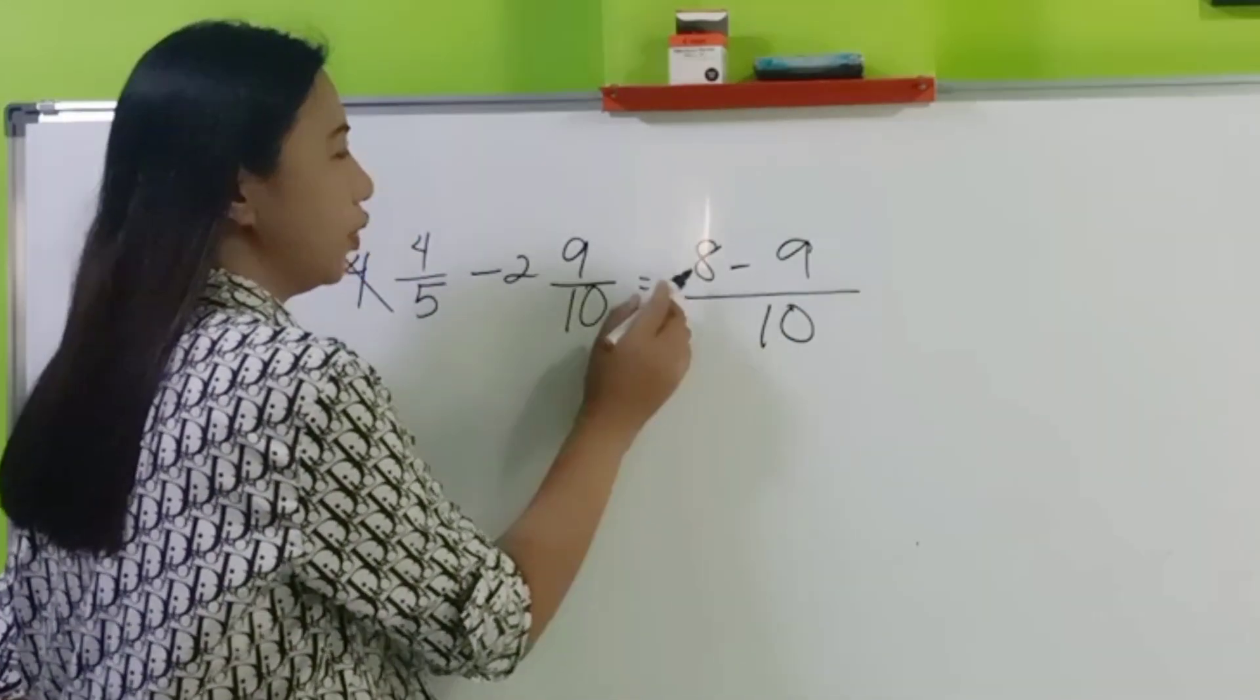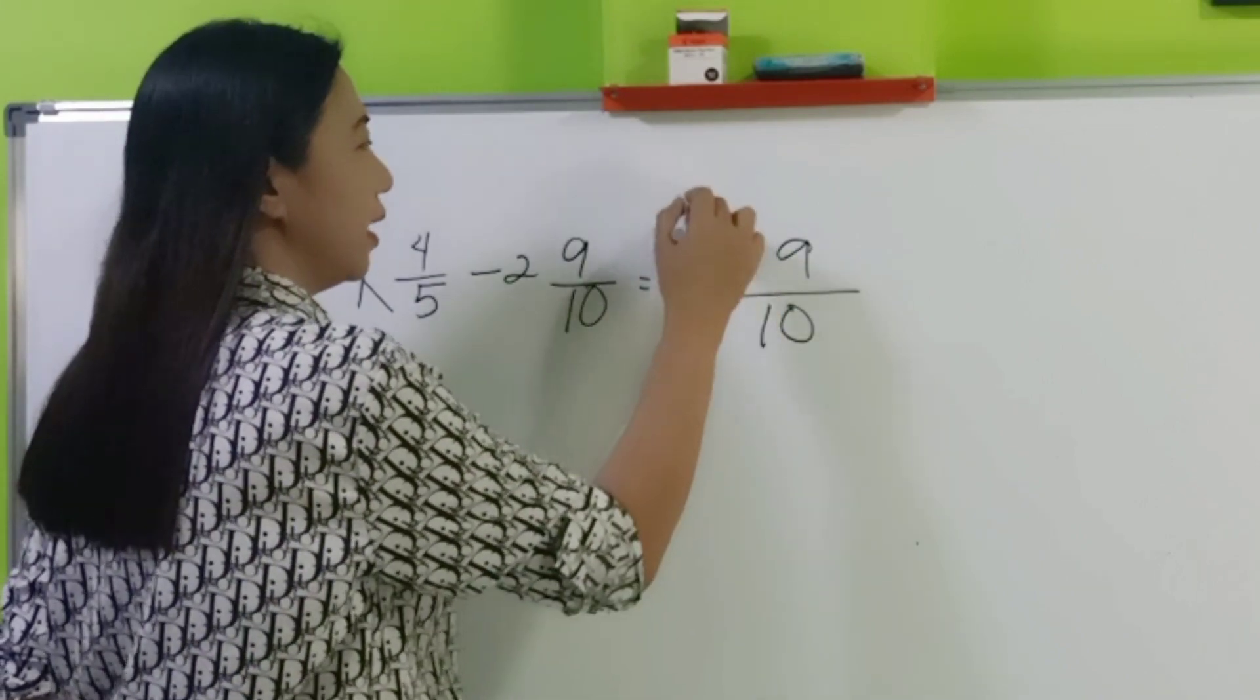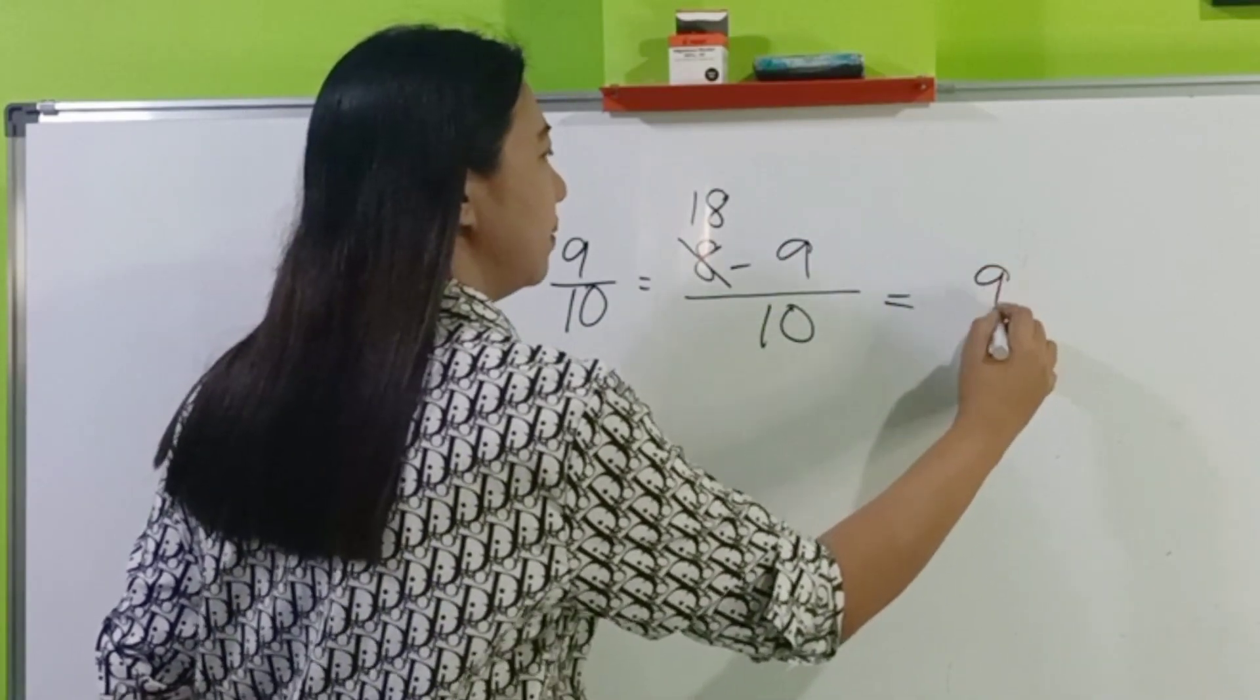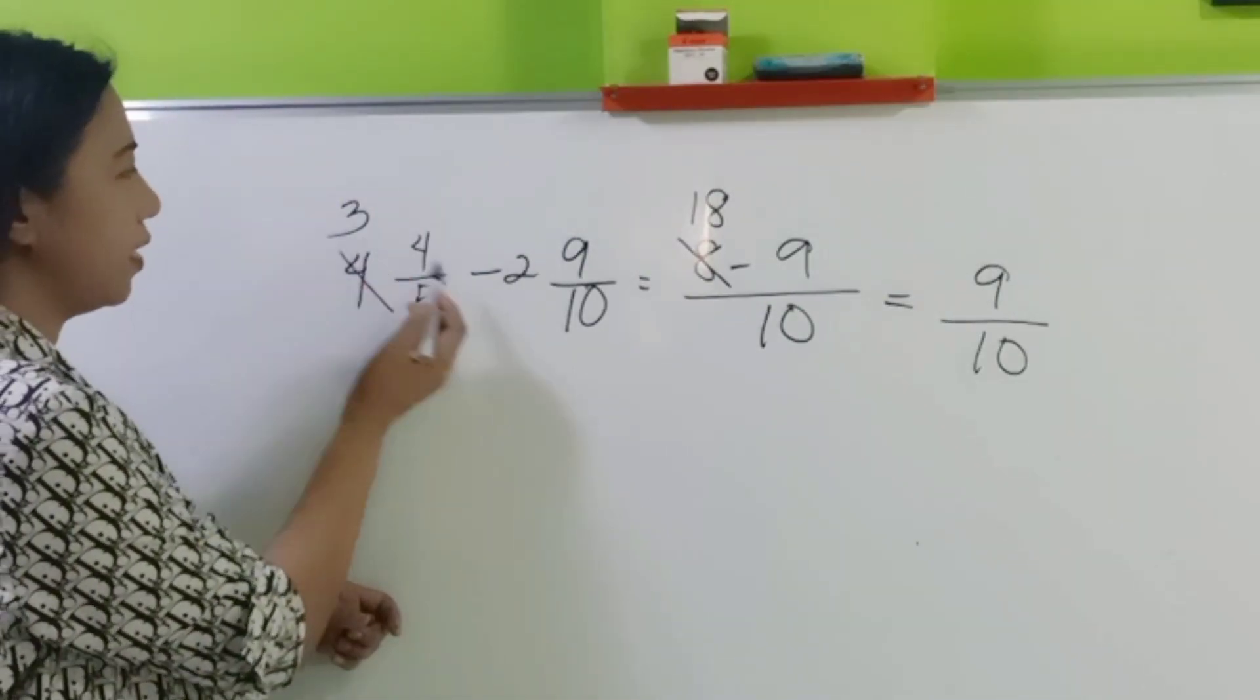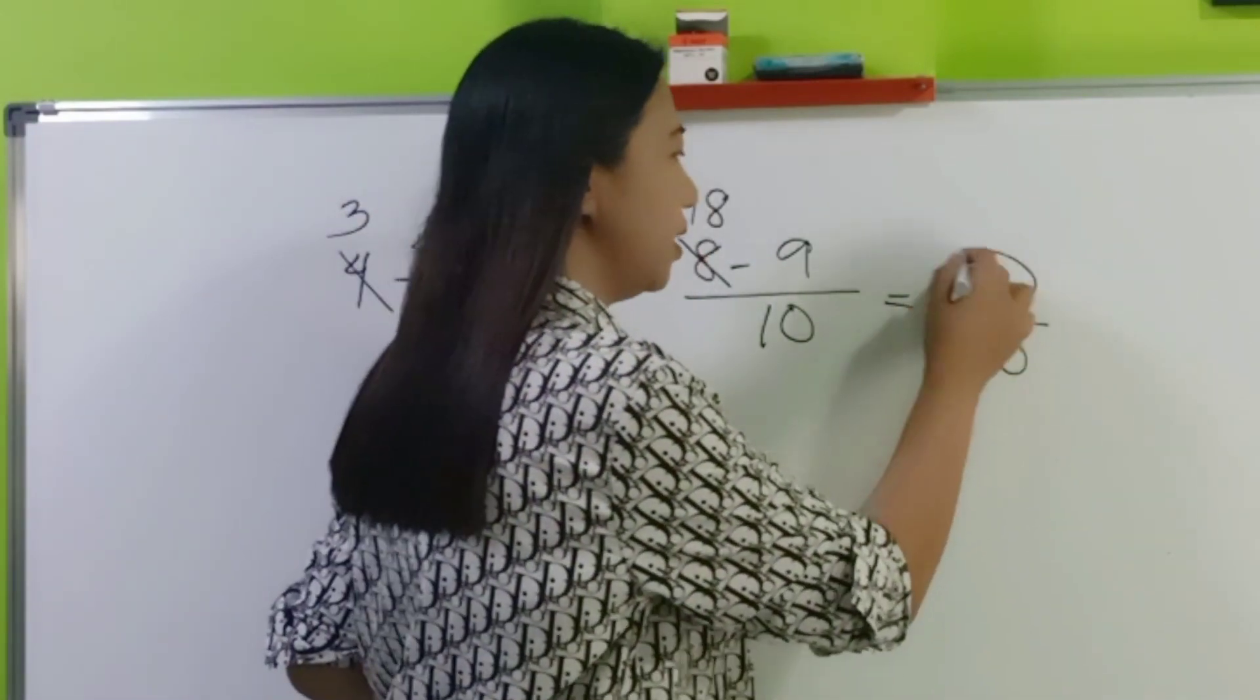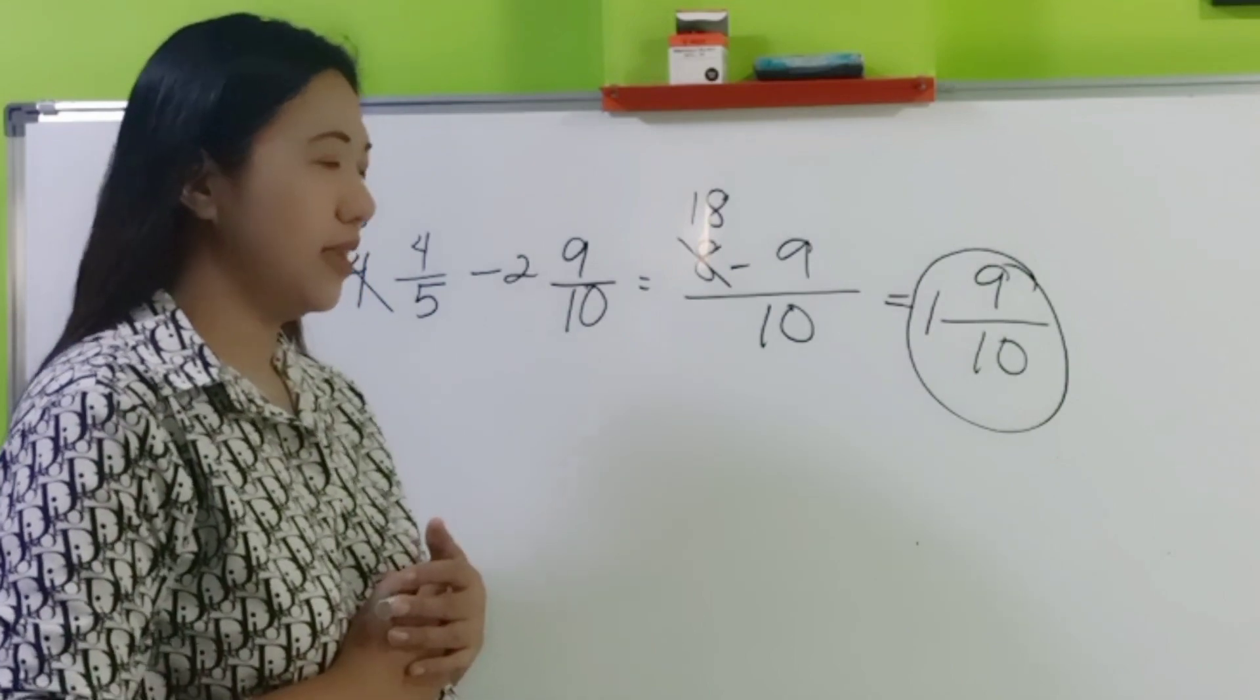Now, add the denominator and the minuend. So, 10 plus 8 is 18. Next, solve. 18 minus 9 is 9 over 10. Do not forget the whole numbers. 3 minus 2 is 1. Can you simplify? Not anymore. So, this is now the answer. 1 and 9 tenths.